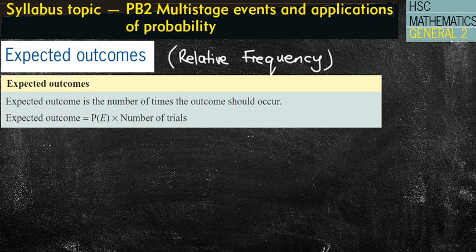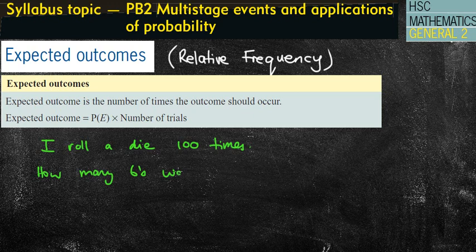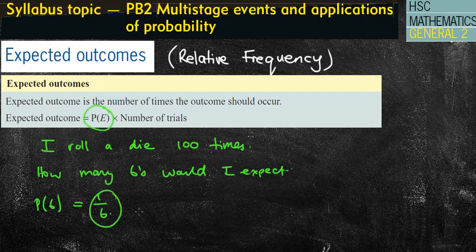So what is it asking? You'll get questions such as: I roll a die a hundred times — how many sixes would you expect? We look at the theoretical probability of rolling a six, which is one in six chances. Then we multiply that by the number of trials, in this case 100. On the calculator, one over six times 100 gives 16 and two thirds — so you'd expect it approximately 17 times.